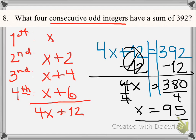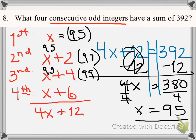Now since X equals 95, we can find all four odd integers by replacing X with 95 in each expression. The first integer is 95. The second integer is 95 plus 2, which is 97. The third one is 95 plus 4, which is 99.